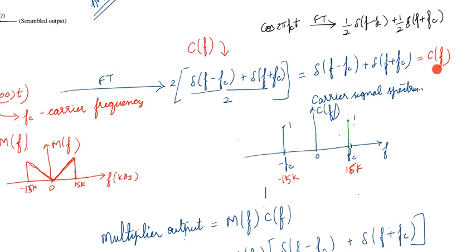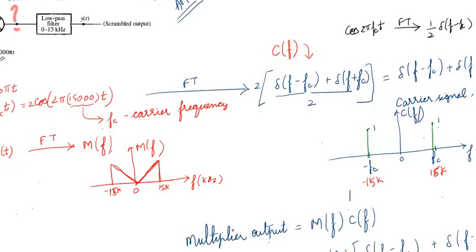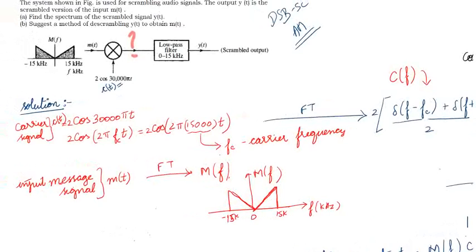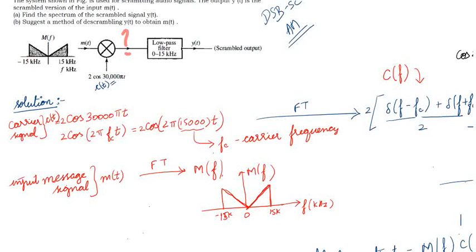Now let us sketch the spectrum. The x-axis is frequency. When f = f_c, δ(f - f_c) gives δ(0), so there is an impulse at f_c with amplitude 1. Similarly, when f = -f_c, δ(f + f_c) gives an impulse at -f_c with amplitude 1. This is the spectrum of 2cos(2π·15000t). We have now found the carrier spectrum c(f).